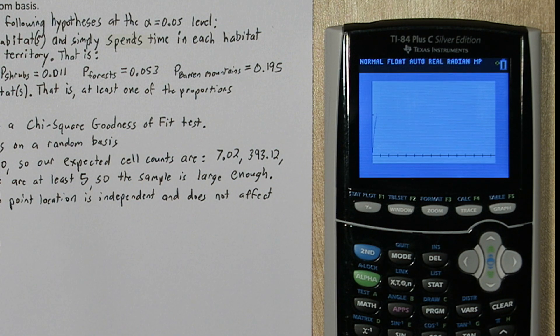Now when I click draw, it's going to draw the chi-square distribution for four degrees of freedom. So at the bottom there, we have our chi-square test statistic and our p-value of approximately zero.